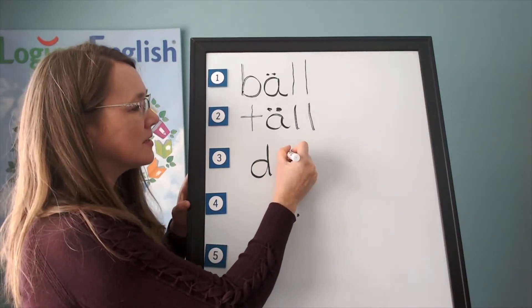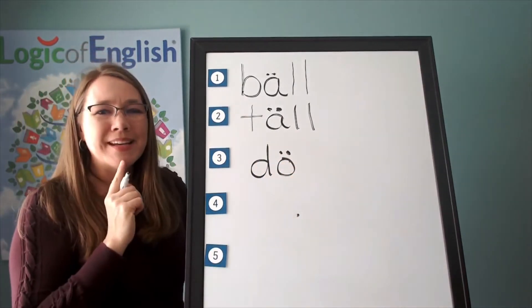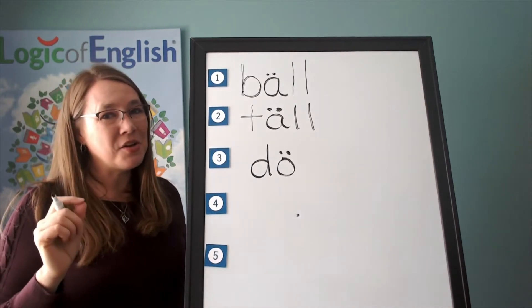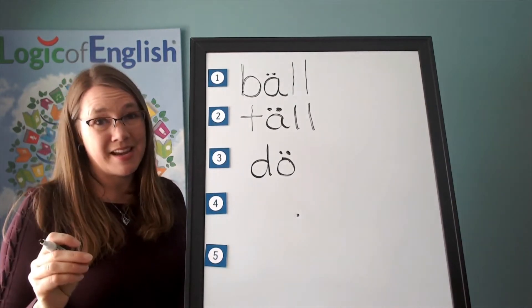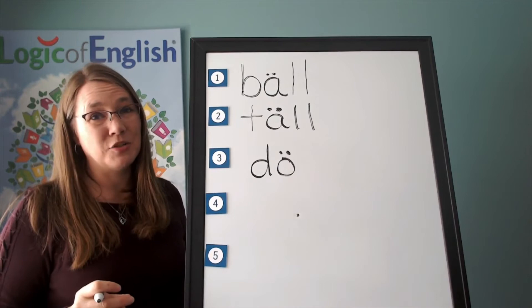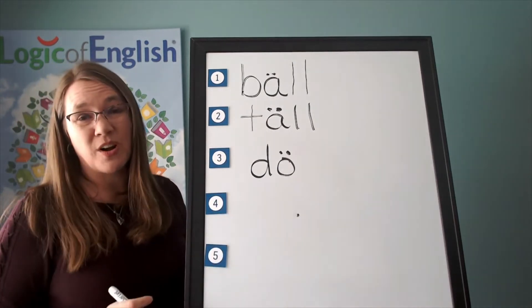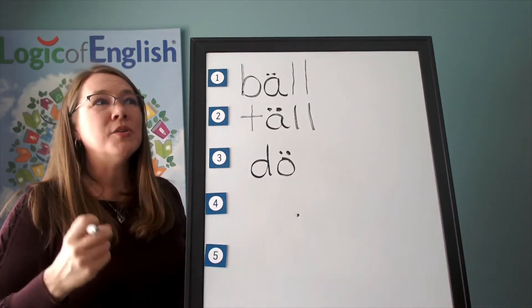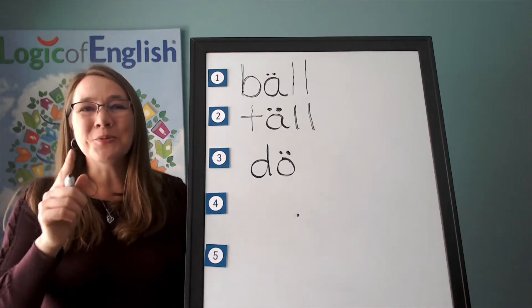You're right. It's its broad sound. Wait a minute. I thought that A, E, O, U always say they're long sounds at the end of the syllable. This is saying its broad sound. Oh, you are listening carefully.